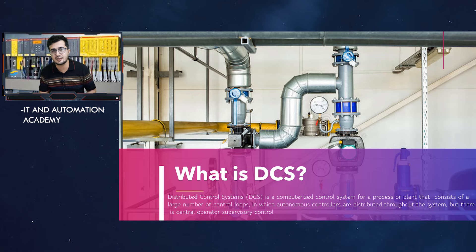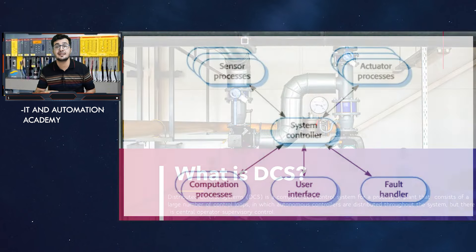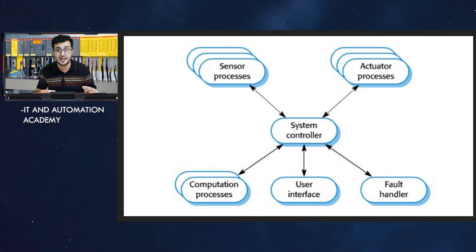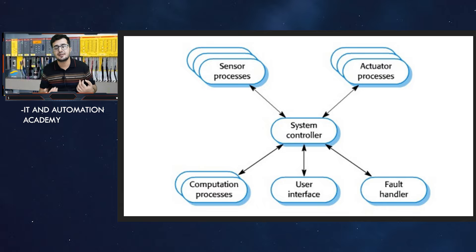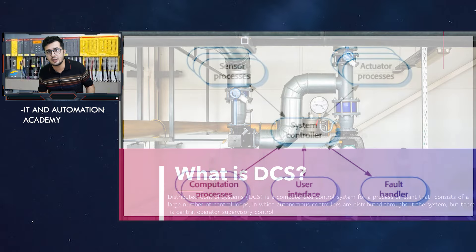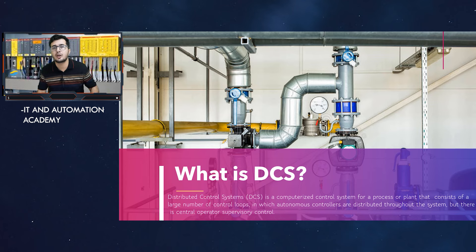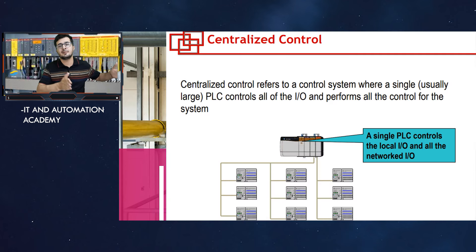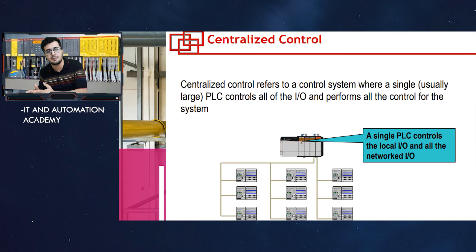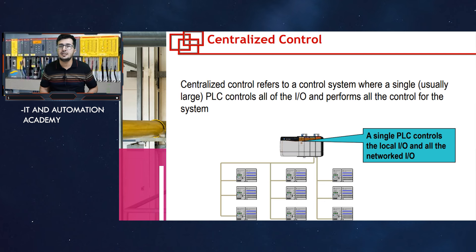First, you need to understand what centralized control and distributed control are. When you talk about centralized control, you have one controller and three units — unit A, unit B, unit C — and all three units are controlled by that one controller.